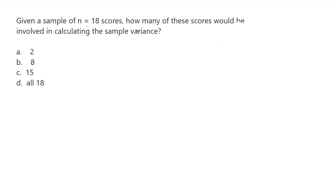Given a sample of n equals 18 scores, how many of these scores would be involved in calculating the sample variance? Is it going to be just 2, 8, 15, or maybe all 18 are involved?